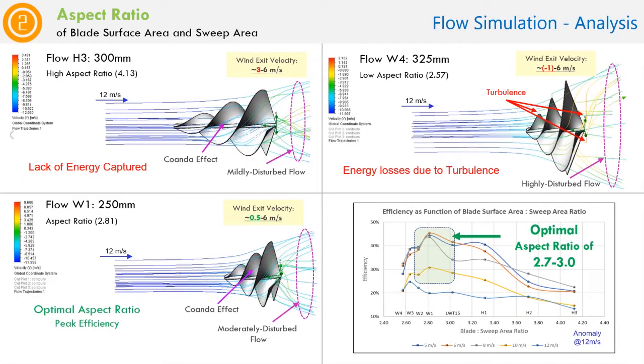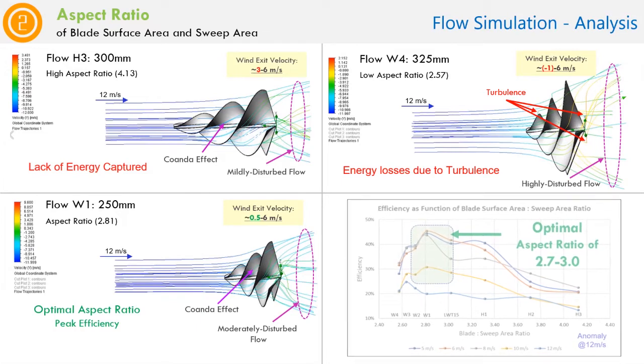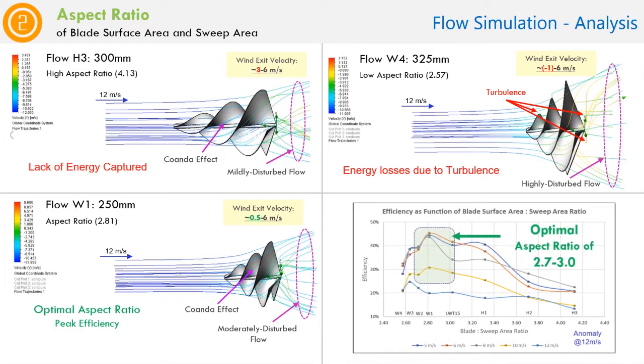High aspect ratio leads to lower pressure and lower power, due to lack of energy captured, as shown in the wind exit velocity. Low aspect ratio leads to higher pressure but more turbulence, even making winds move backwards, which diminishes the Coandă effect and lowers the efficiency. Optimal aspect ratio is achieved between 2.7 and 3, where pressure is adequately captured without much turbulence while still benefiting from the Coandă effect.